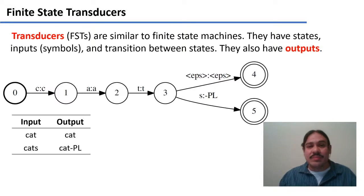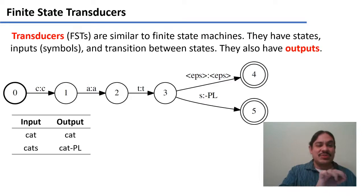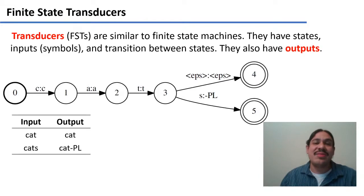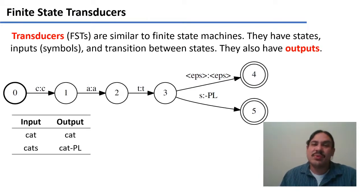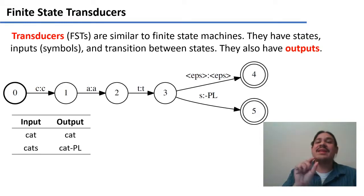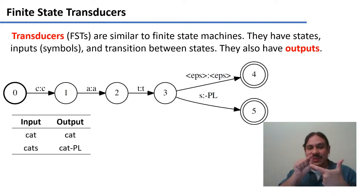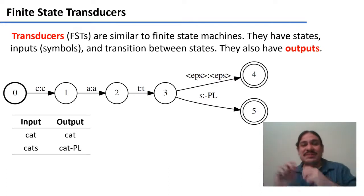For the other word, you go from initial state 0, and the transitions from 0 to 1, 1 to 2, 2 to 3 give you "cat". Then, when you transition from state 3 to state 5, you get the input S — the plural S. The output is going to be a dash, a P, and an L, to signify the plural. So the output string is C-A-T-dash-P-L, which is a morphological description of the word — cat plus the plural morpheme.